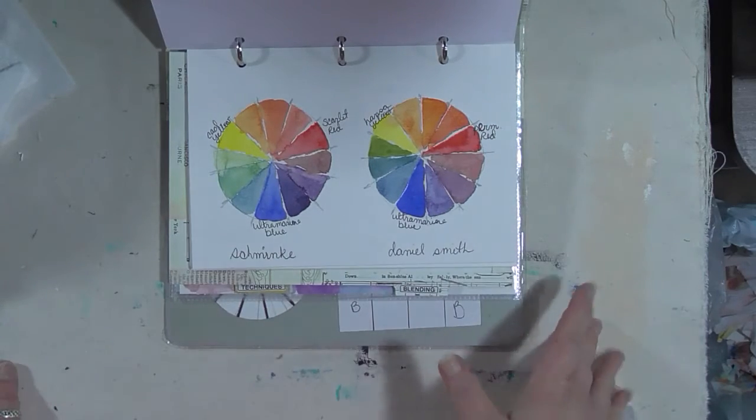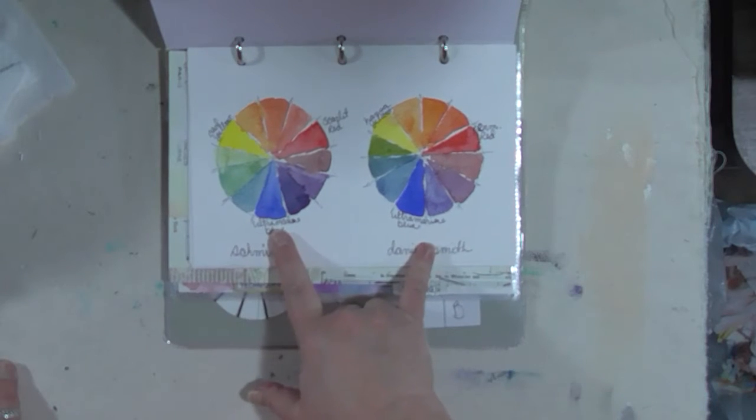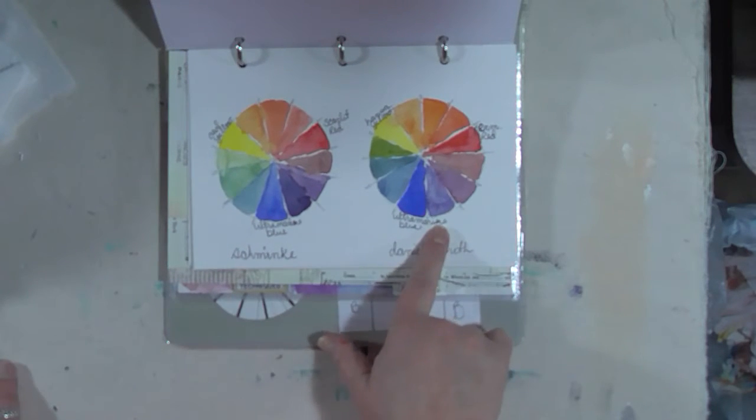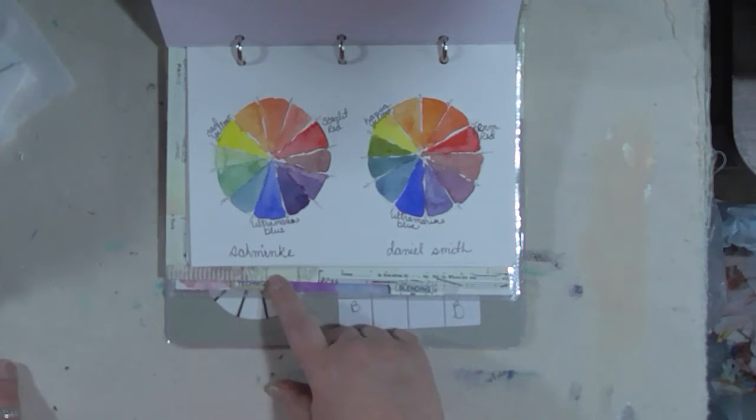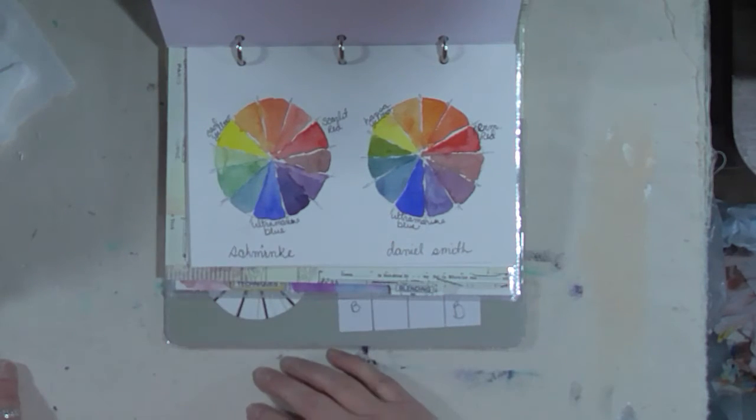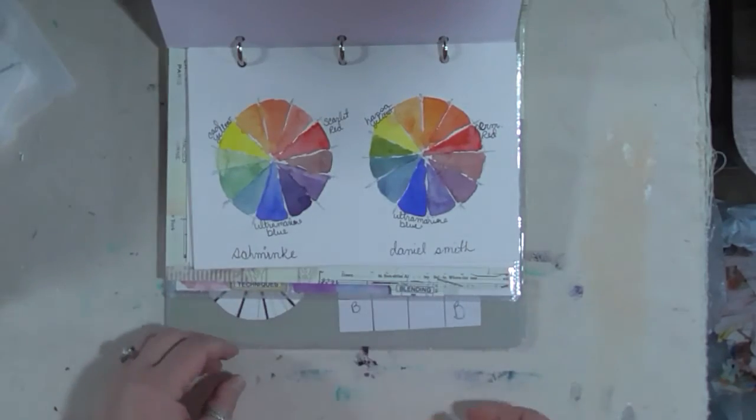I did some color wheels for the two brands we have in here, Schmincke and Daniel Smith. I only used the three primary colors - yellow, red, and blue - then did some color mixing to make up the other colors. I'm going to show you how I did that in the next Watercolor Wednesday.